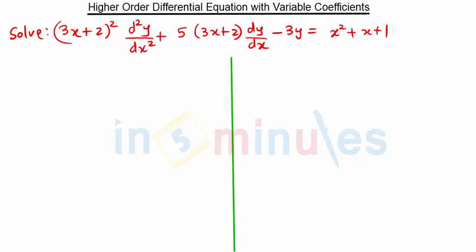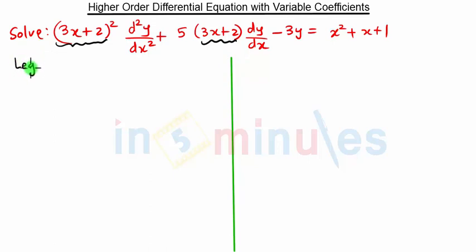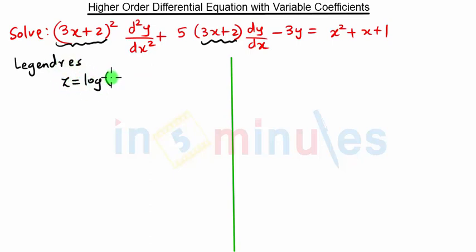So this is our question. If you see in this question we have the term 3x plus 2 repeating. So it is of the form of Legendre's equation. So in Legendre's equation we put z equal to log of 3x plus 2.